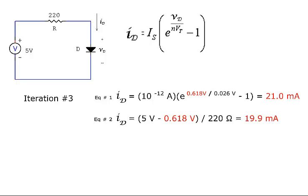Iterating a third time with a diode voltage of 0.618 volts gives currents of 21.0 milliamps and 19.9 milliamps. The difference is only about 5%. In this example, that will be considered close enough.